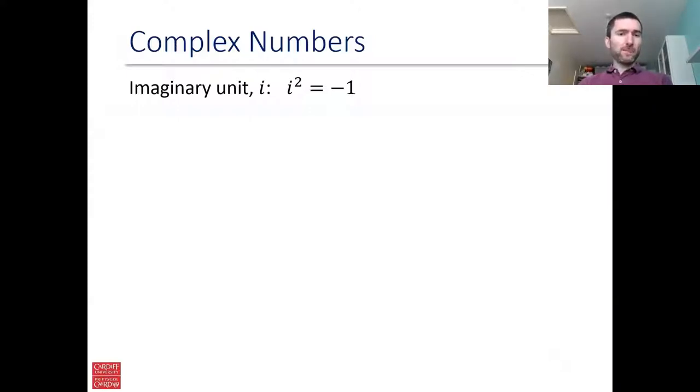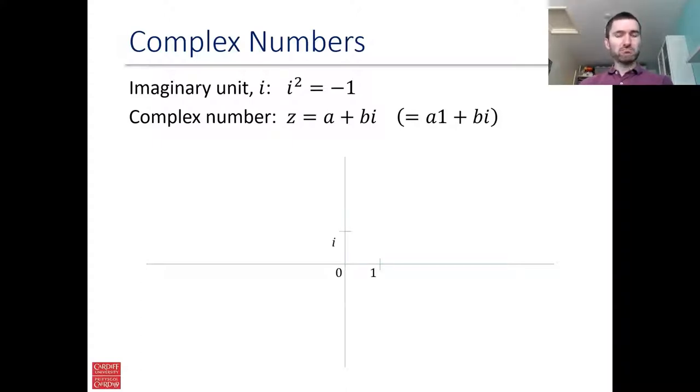Then a complex number is just a combination A plus Bi where A and B are real numbers and i is this new number, this imaginary unit that we defined. You could also think of a complex number as A times one plus B times i if you like. So what we've got is multiples of one which is the real unit and multiples of i which is called the imaginary unit. And so complex numbers are combinations of these two things and so what we've got is a two-dimensional plane of numbers. So we call this the complex plane.